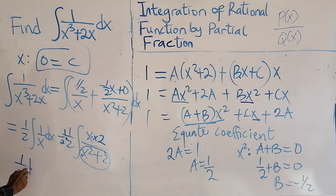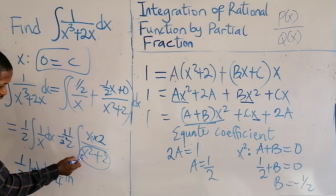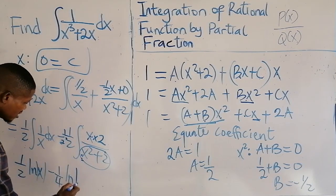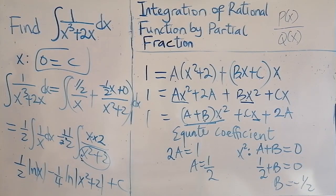So my final conclusion is 1 over 2, integral of 1 over X is ln X and then minus 1 over 4 ln. Whenever the derivative of the denominator is equal to the numerator, it's going to be ln of the denominator plus C. And that's finished the solution.